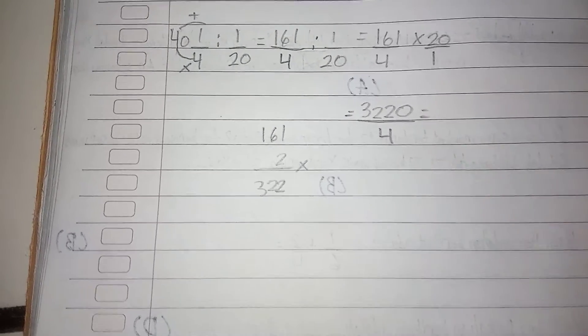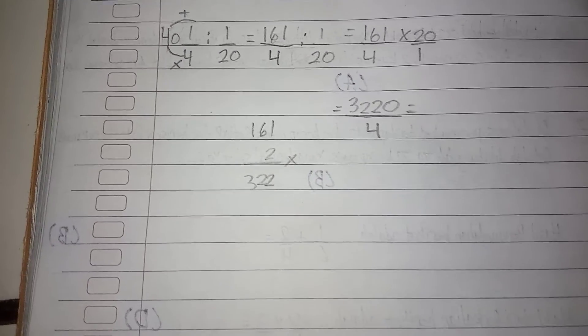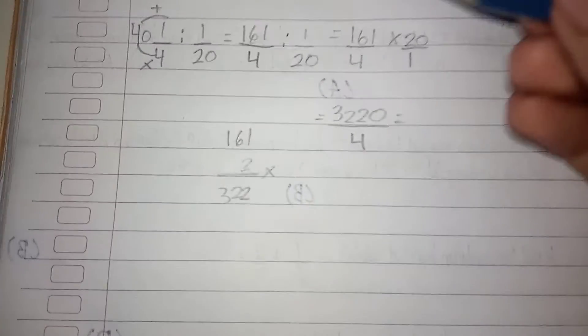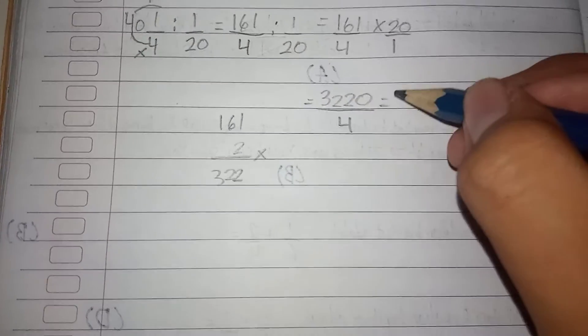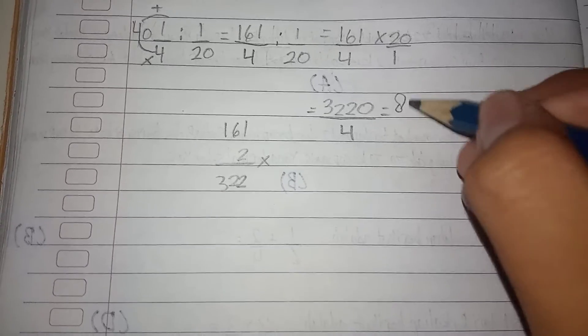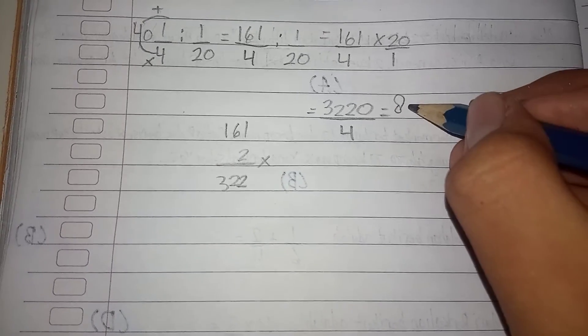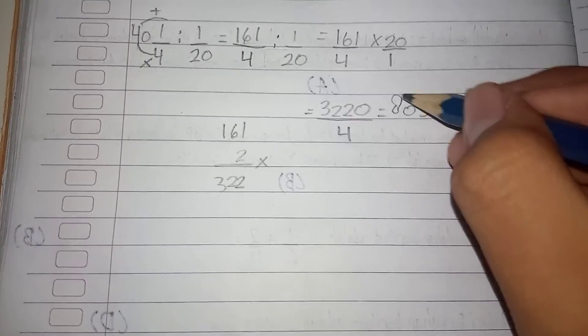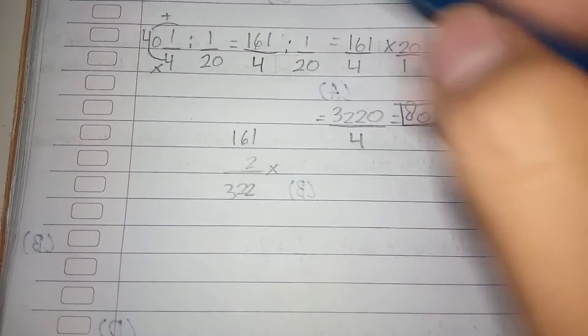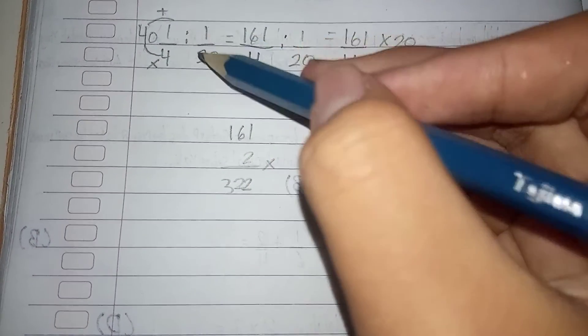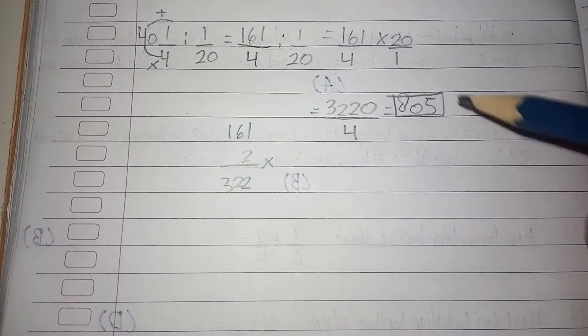That's going to be equal to... so like this: 32 divided by 4 is 8, right? Then 20 divided by 4 is 5. That's it! So 41 over 4 divided by 1 over 20 is equal to 805.